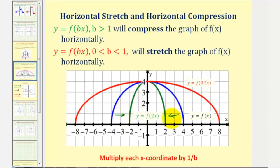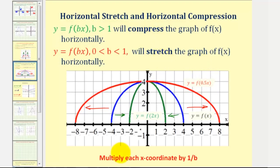To find points when we have a vertical stretch or compression, we multiply each y-coordinate by a. Now looking at the value of b, if b is greater than one, we have a horizontal compression, which we see here in green by the graph of y equals f of two x. If b is between zero and one, we have a horizontal stretch, as seen by y equals f of zero point five x. When we have a horizontal stretch or compression, we multiply the x-coordinates of the parent function by one over b, which is the same as dividing by b.